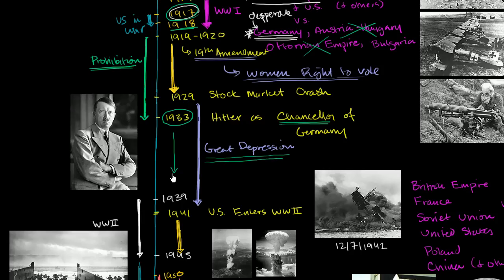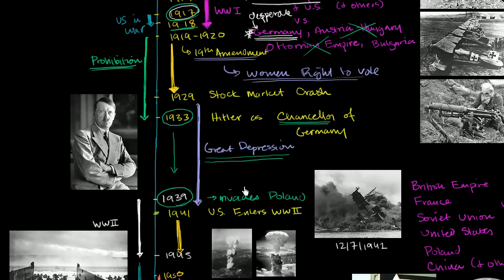The rest of the world was watching Hitler consolidate power. He came in democratically but was essentially consolidating power under himself, turning it into a dictatorship. He was militarizing Germany. People started to get concerned, but they all had the doctrine of appeasement — let's just not make him too angry and maybe he won't start anything too bad. But in 1939, Germany invaded Poland, which was the straw that breaks the camel's back, so to speak, and it begins World War II.